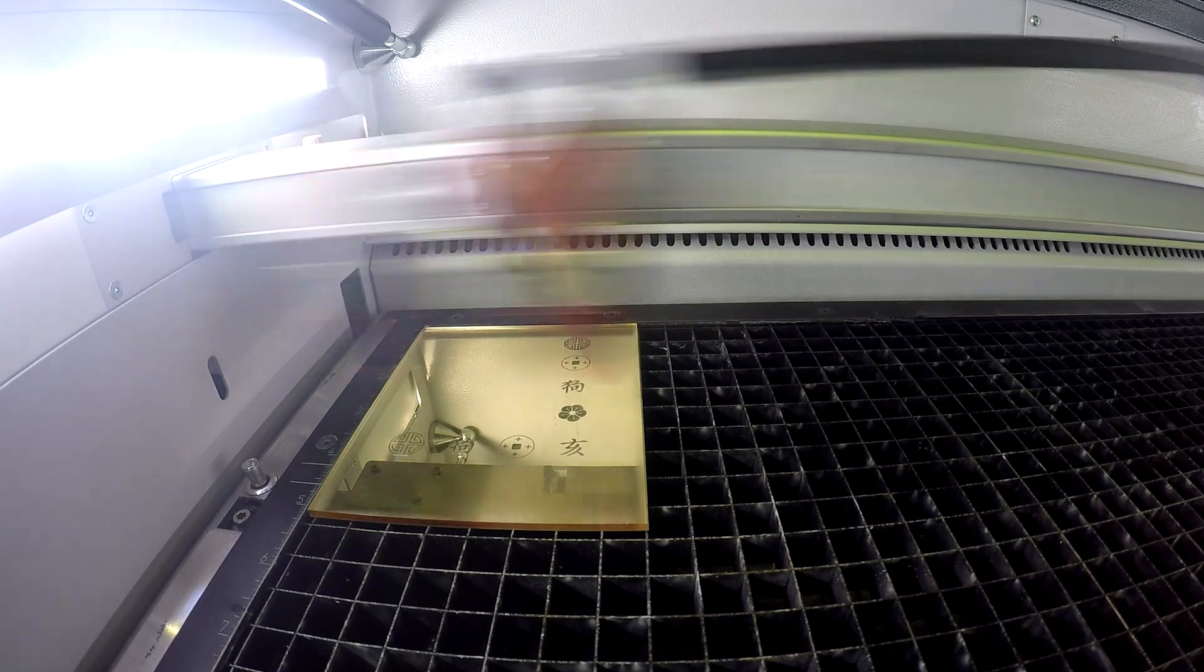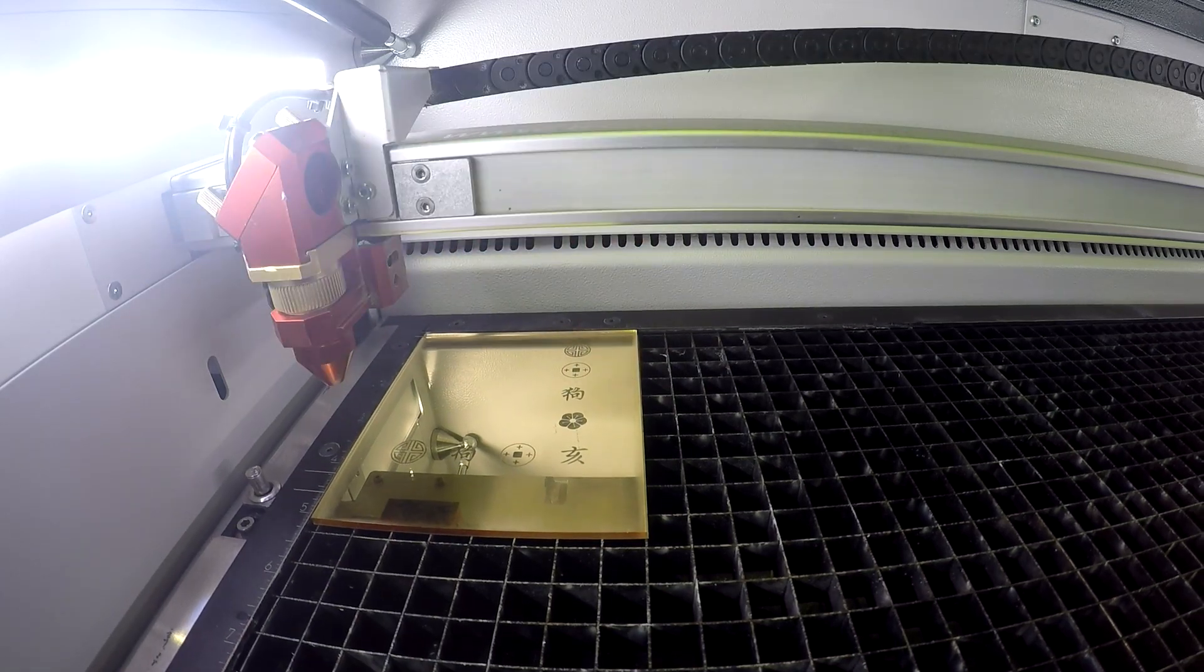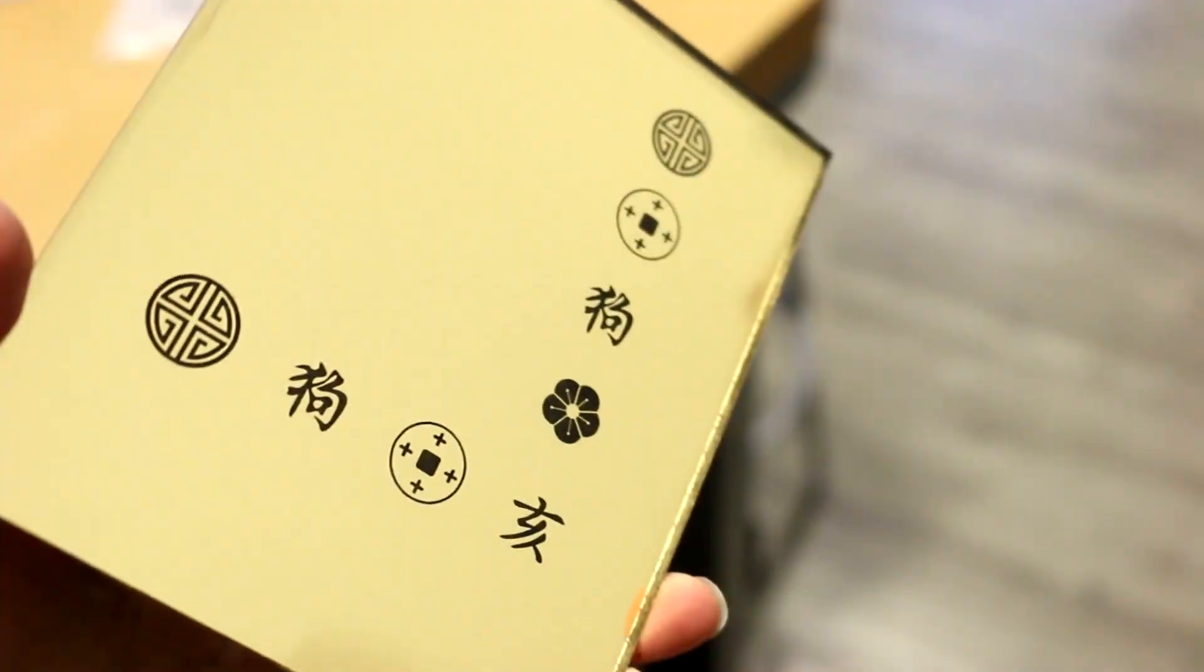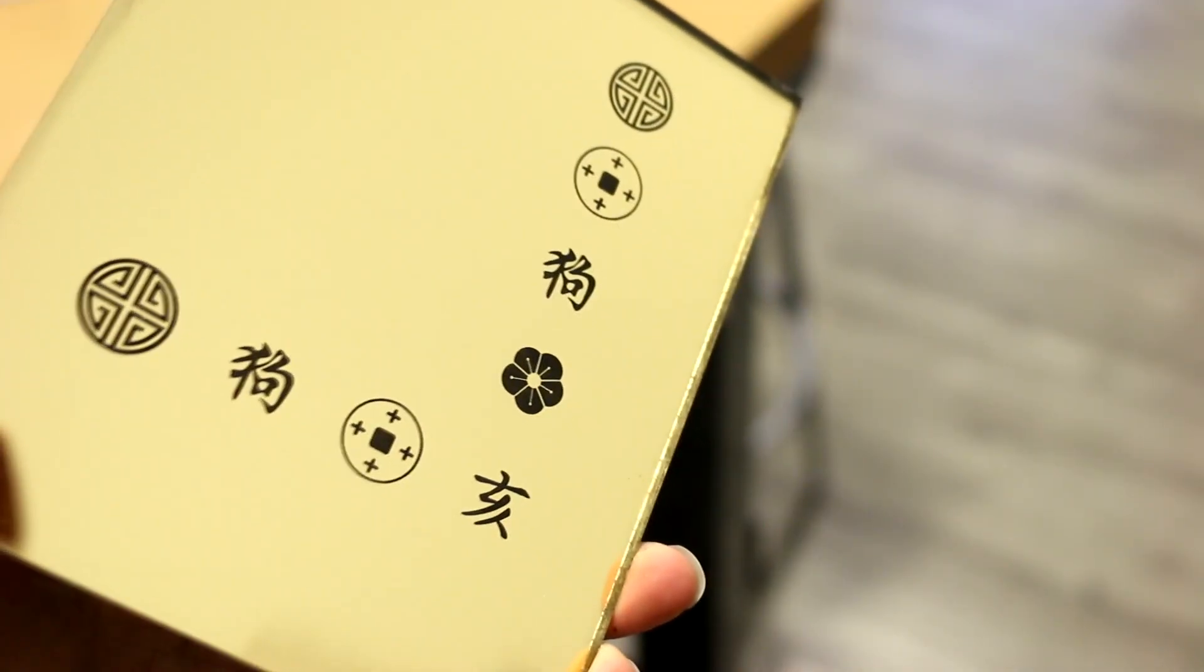We started by engraving our material using the fiber laser source. The fiber is great with the Troglas mirror because it penetrates the top two layers of clear acrylic on the material and dissolves the mirrored layer at the base, leaving a clean finish.